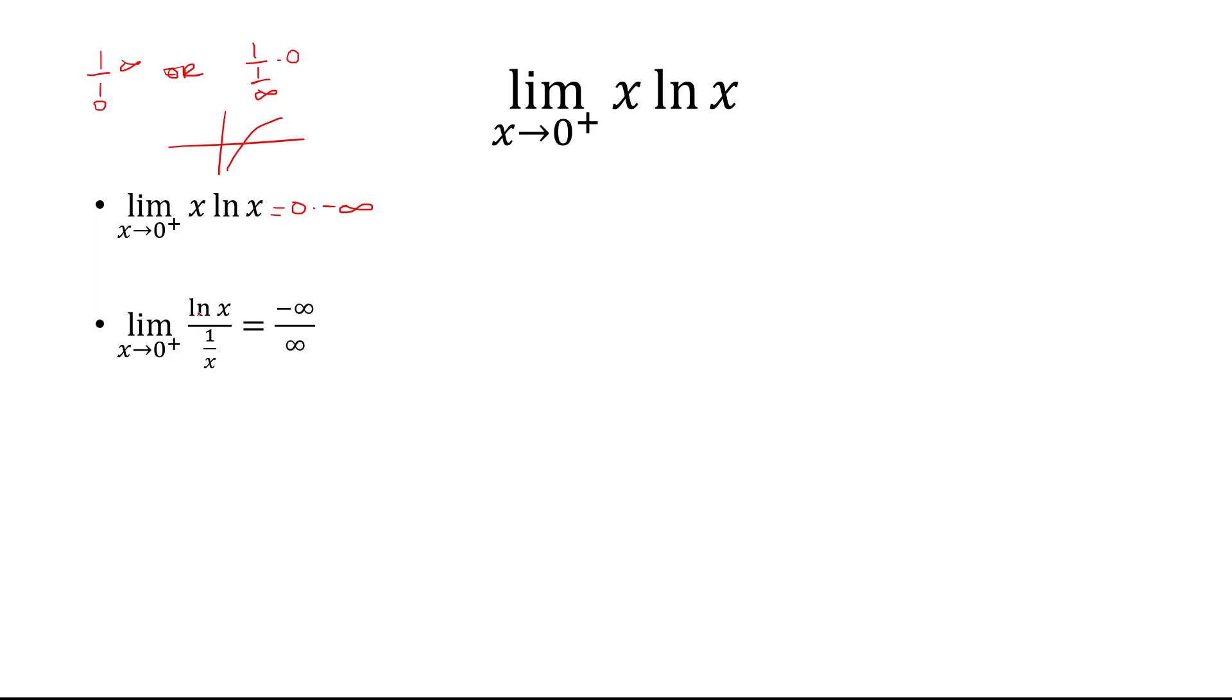So we have ln of x over 1 over x, and ln of x, that goes to negative infinity. And then 1 over x, that looks something like this, and from the right it's going to positive infinity.